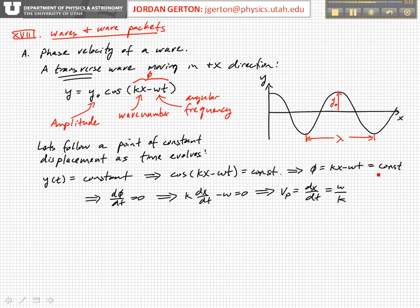That's the only way for y of t to be equal to constant, other than the trivial case that y sub 0 is equal to 0. And so if phi is equal to constant, that means that d phi dt is equal to 0. And if we take the derivative of phi with respect to t, we get k times dx dt minus omega is equal to 0.